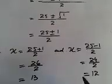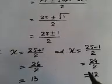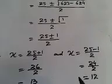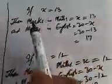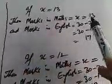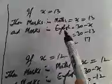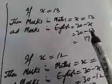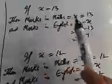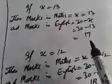Now we check what these values mean for our assumed variable x. If x equals 13, then marks in Mathematics are 13, and marks in English are 30 minus x, which is 30 minus 13, that is 17. So if she scored 13 in Mathematics, she scored 17 in English.